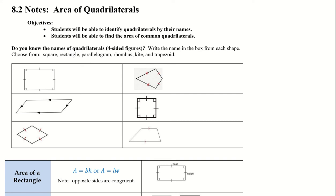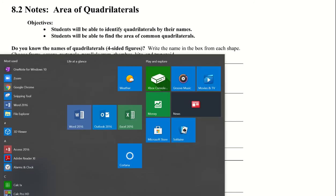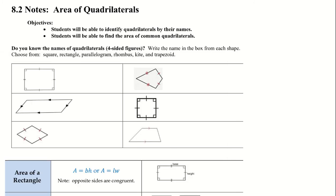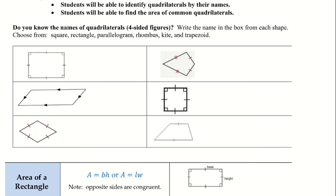Today we're doing 8.2 notes: area of quadrilaterals. Our objectives are: you will be able to identify quadrilaterals by their names, and students will be able to find the area of common quadrilaterals.